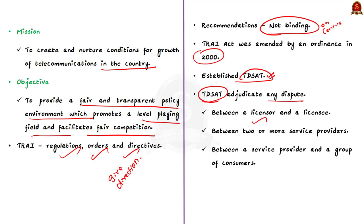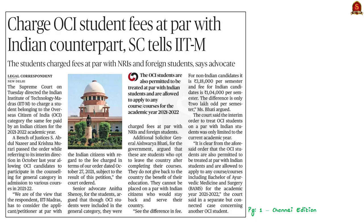TDSAT was set up to adjudicate any disputes between a licensor and licensee, between two or more service providers, or between a service provider and a group of consumers. It also hears and disposes of appeals against any direction, decision, or order of TRAI.